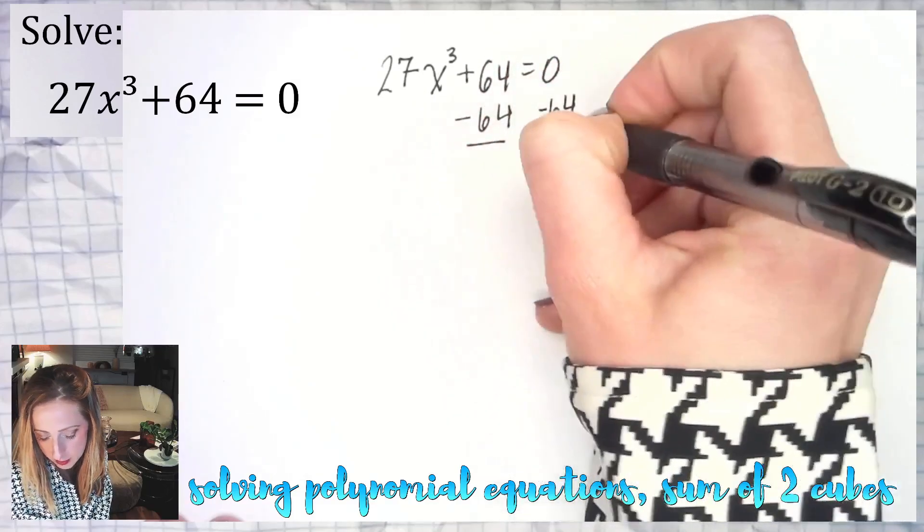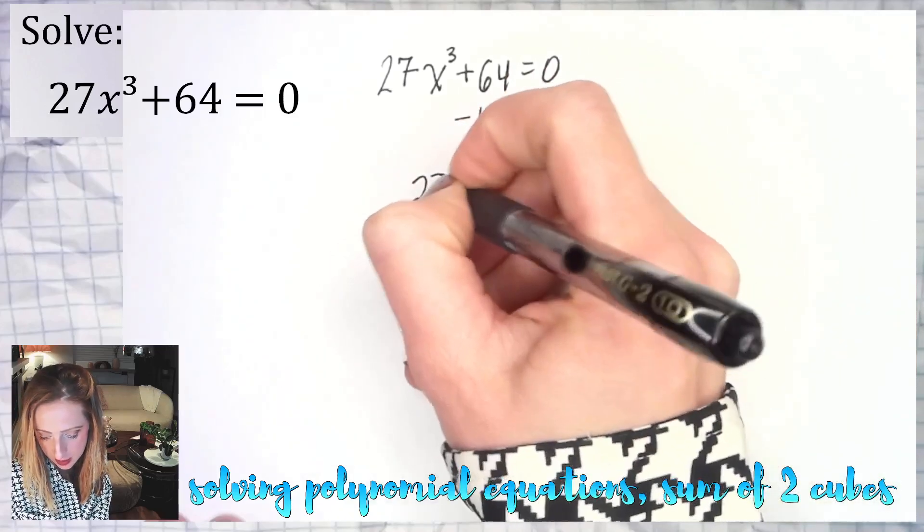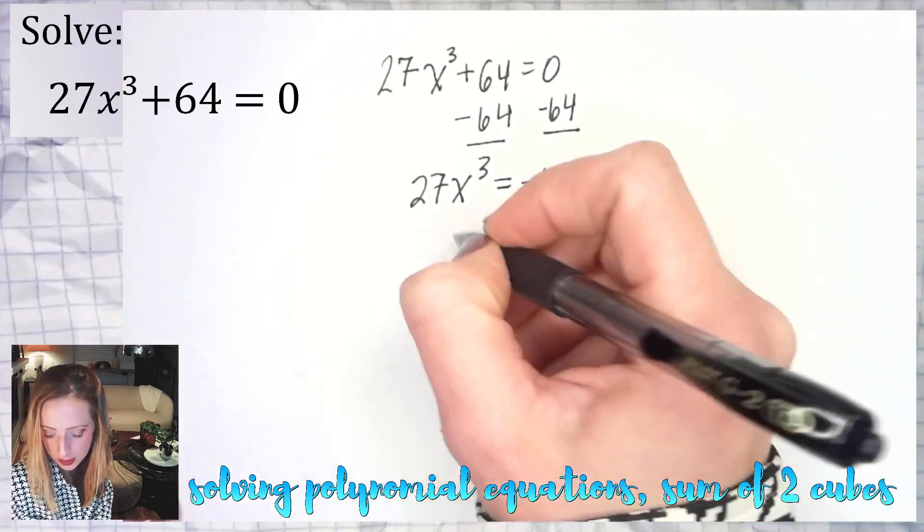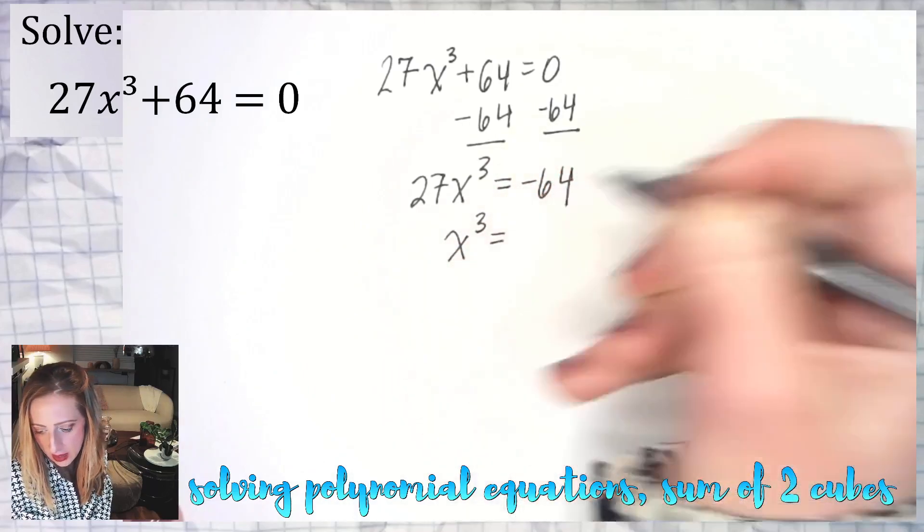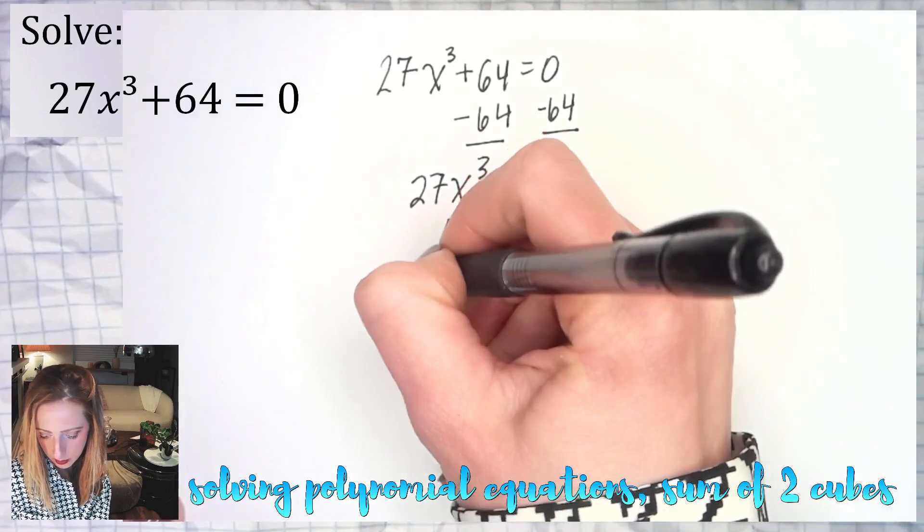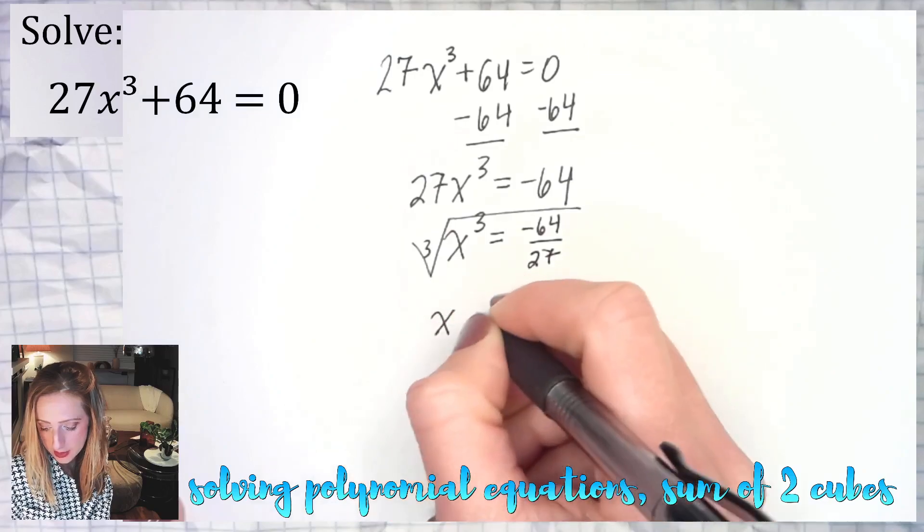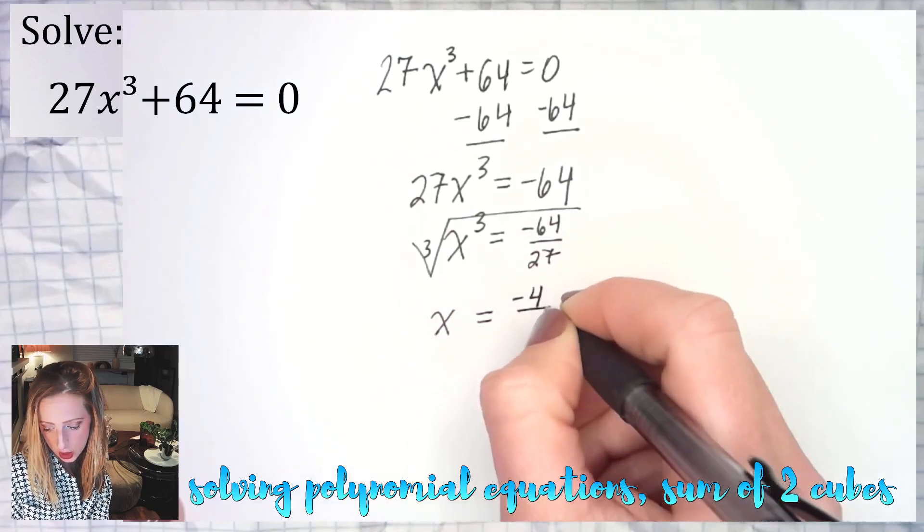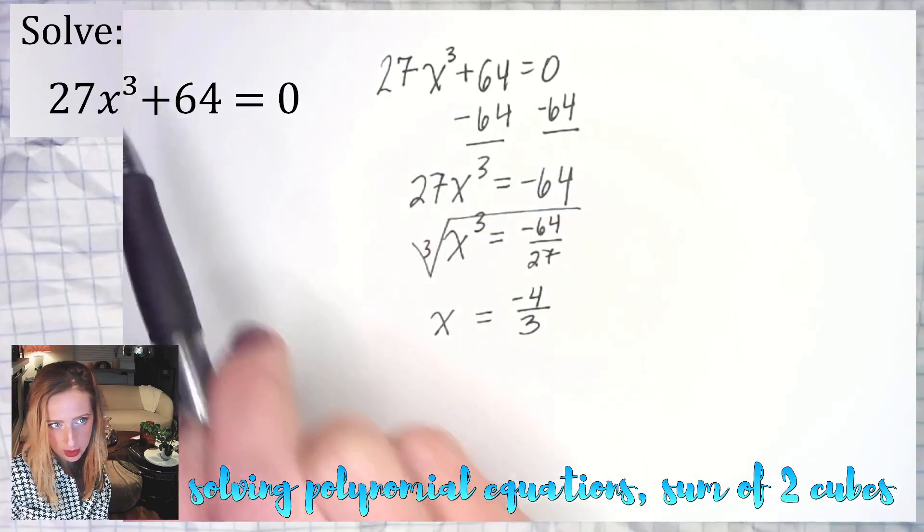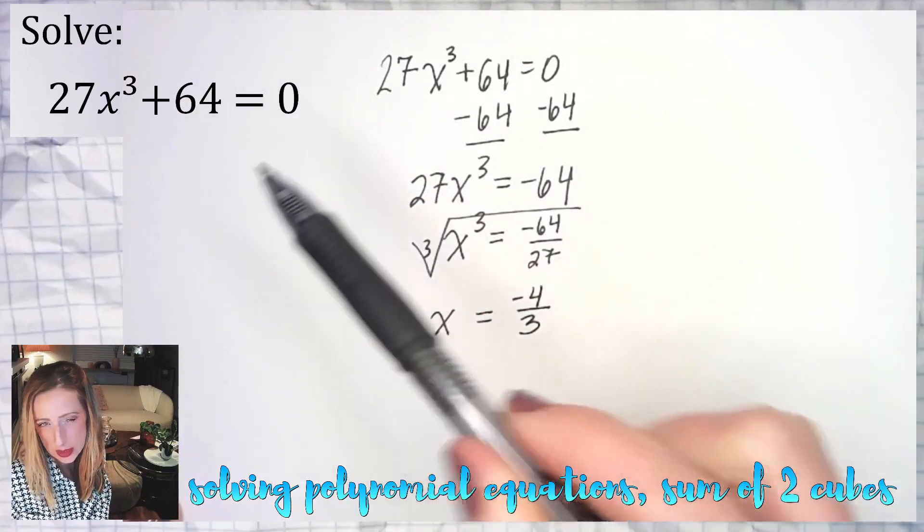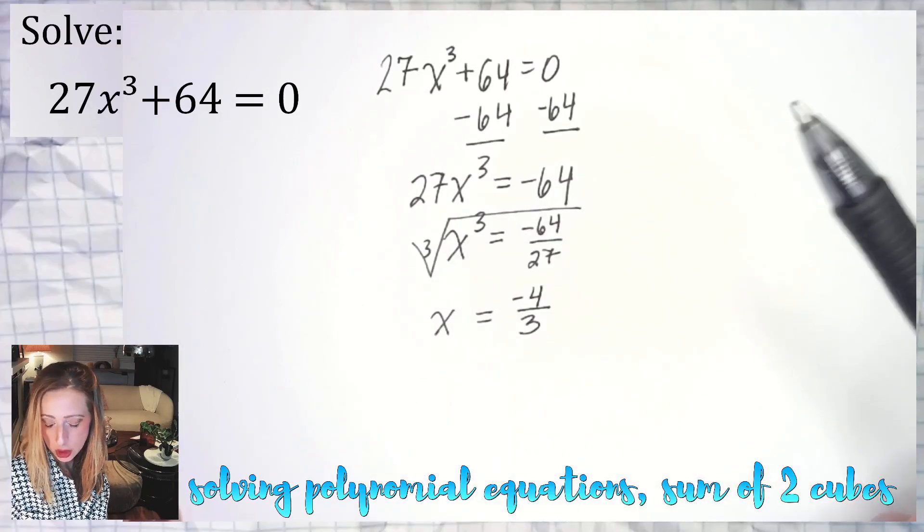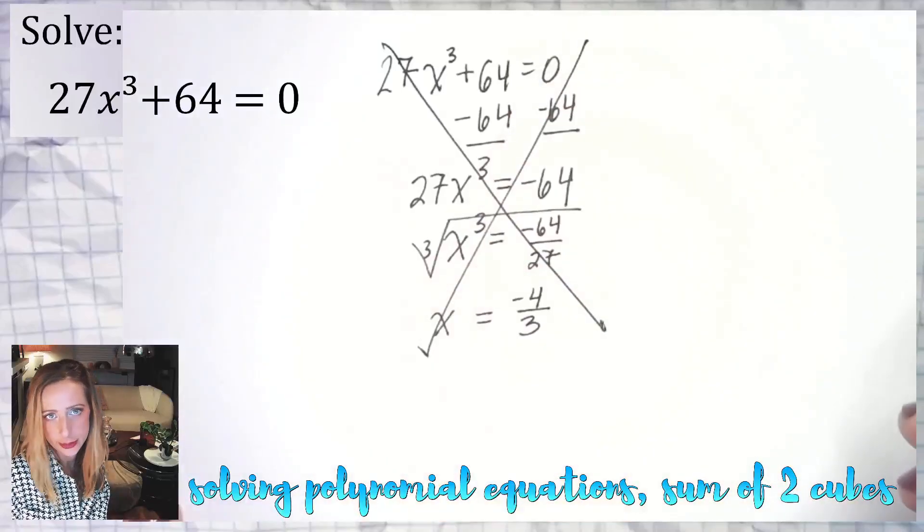Don't do this, this is not good. 27x³ equals negative 64. All the people watching it on mute, you know they're copying this down right now. I'm about to scribble it all out. Then divide both sides by 27, you get negative 64 over 27. Cube root of both sides, you get x equals cube root of negative 64 is negative 4, cube root of 27 is 3. Seems great right? But the biggest power is 3, we should be getting three answers. In particular, when it's a sum or difference of two cubes, you'll get one real answer and two imaginary answers. No good, this is not how we do it.